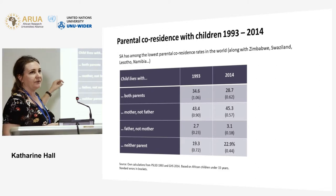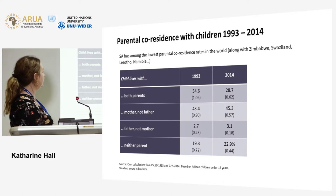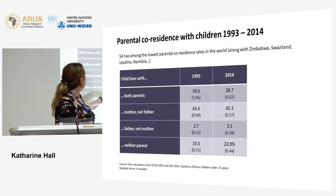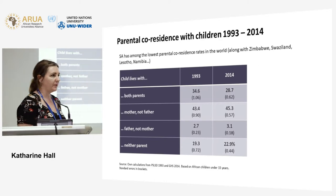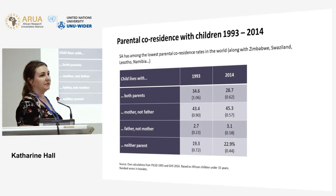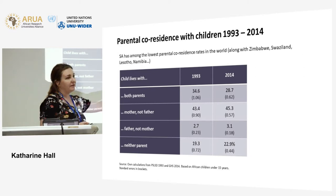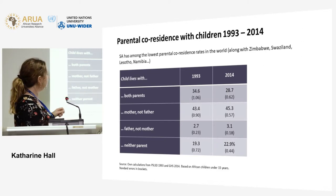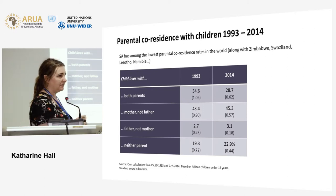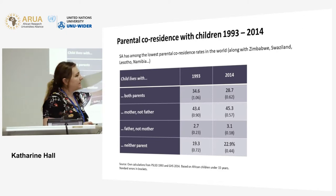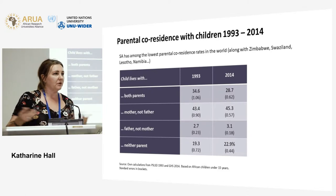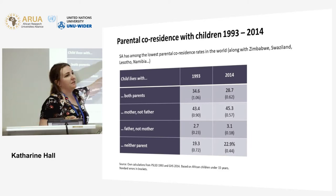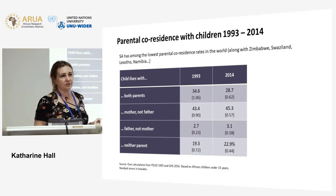There are incredibly high rates of parental absence from children's lives. Using 1993 — a living standards survey at the end of apartheid — as a baseline, what we've seen since is a decline in the share of children living with both parents and an increase in the share living with neither parent. Only Zimbabwe has higher rates of parental absence out of 77 countries studied worldwide. Post-apartheid has not brought greater co-residence of children with their parents; in fact, it has brought less.